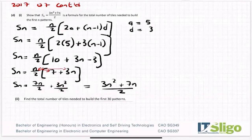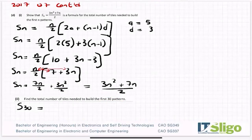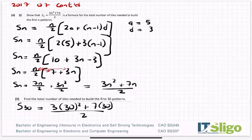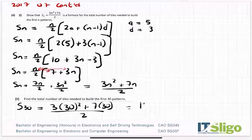When asked to find the sum of the first 30 patterns, that's S30, so n is replaced by 30: (3 × 30² + 7 × 30) / 2. Using the calculator: (3 × 900 + 210) / 2 = (2700 + 210) / 2 = 1455 tiles.